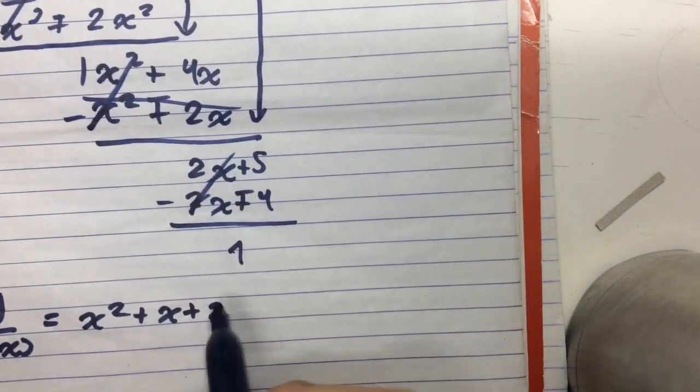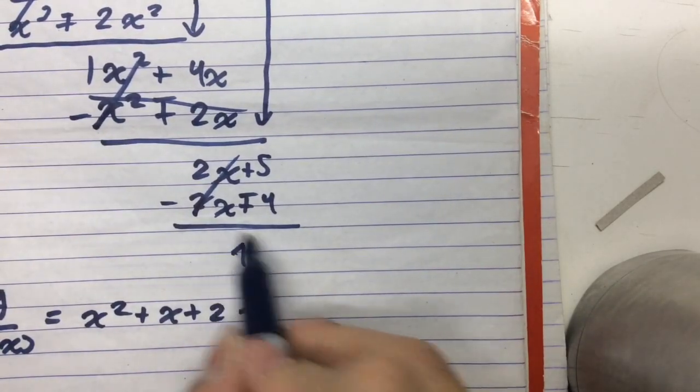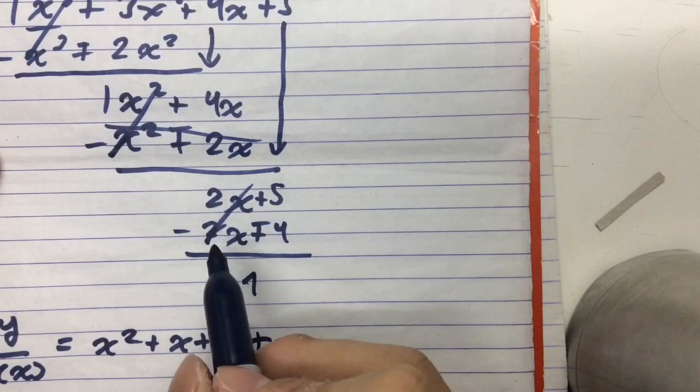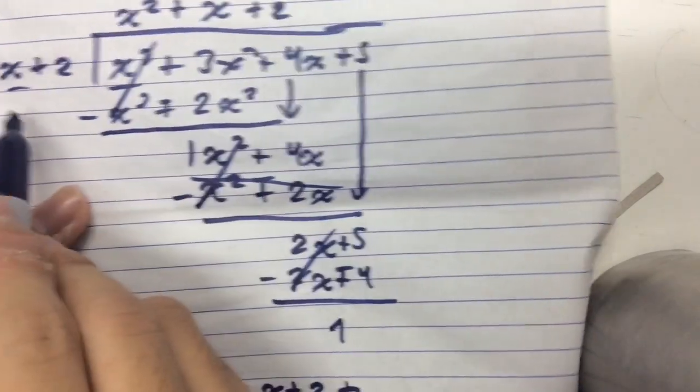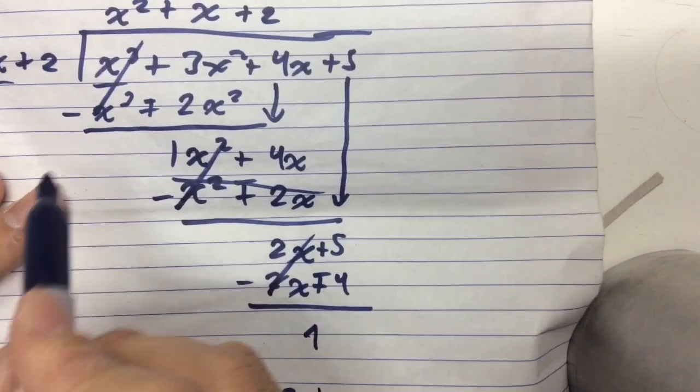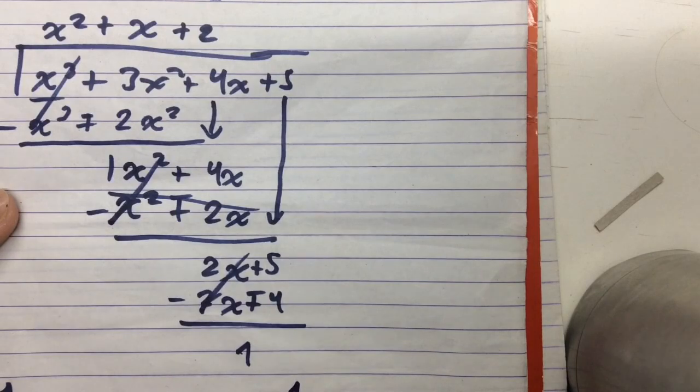Plus. And then we make a fraction with the remainder over here being the numerator. And the quotient—no, not the quotient—but rather, the divisor is the denominator. So this would be 1 over x plus 2.